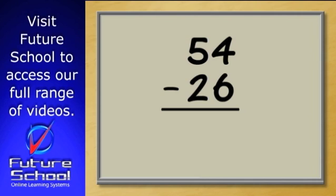Well, 54 is a bigger number than 26, so that's okay. But look at the ones column. The first thing we have to do is take 6 away from 4. How can we do that?